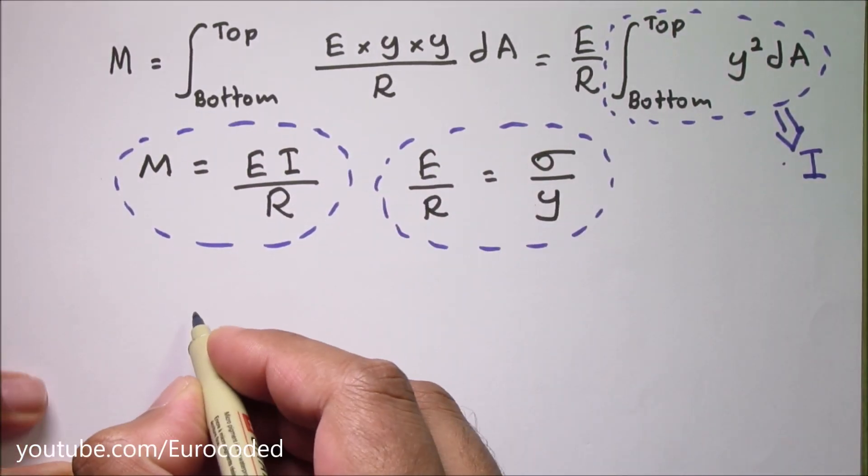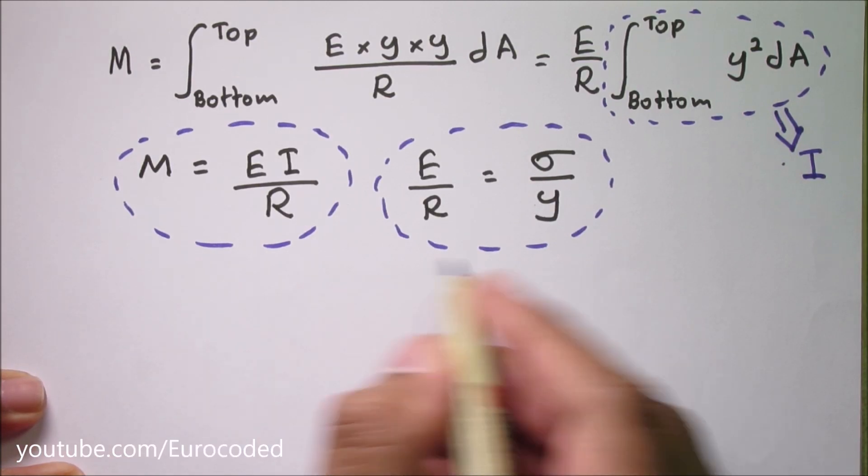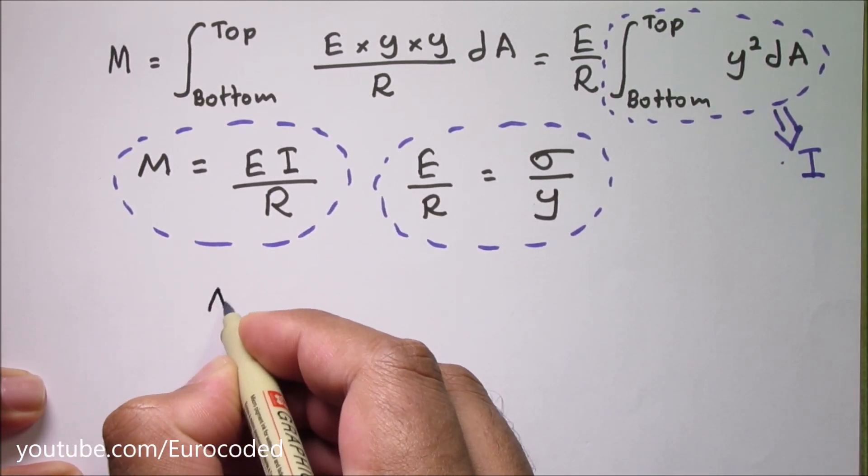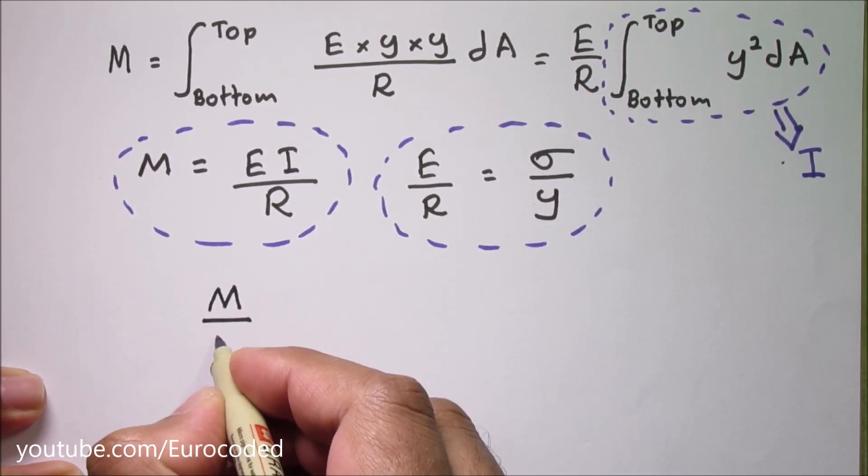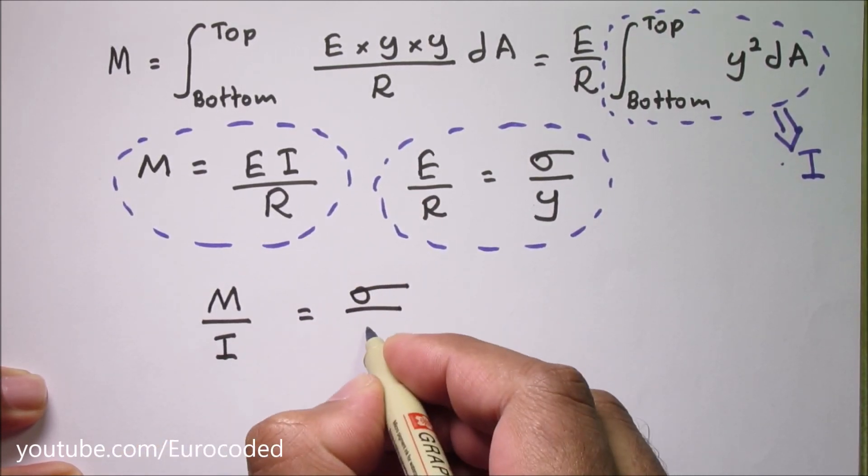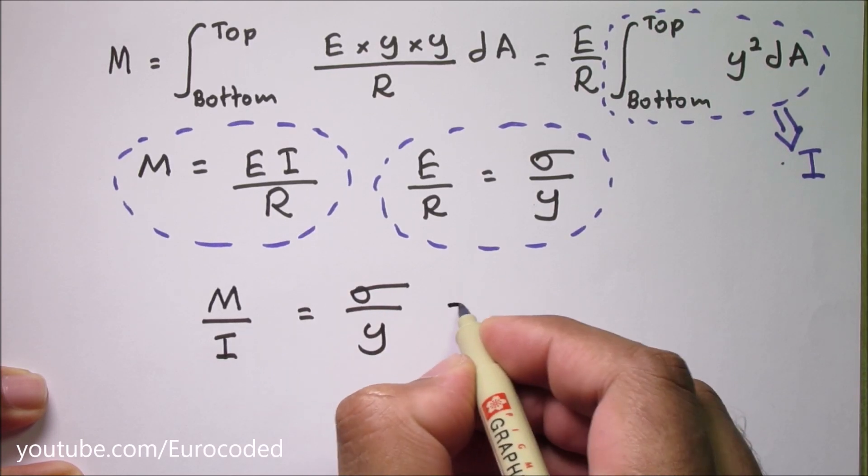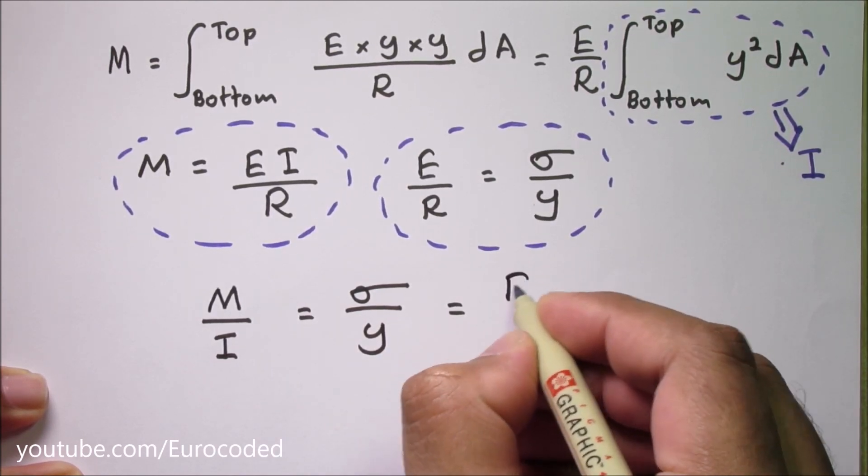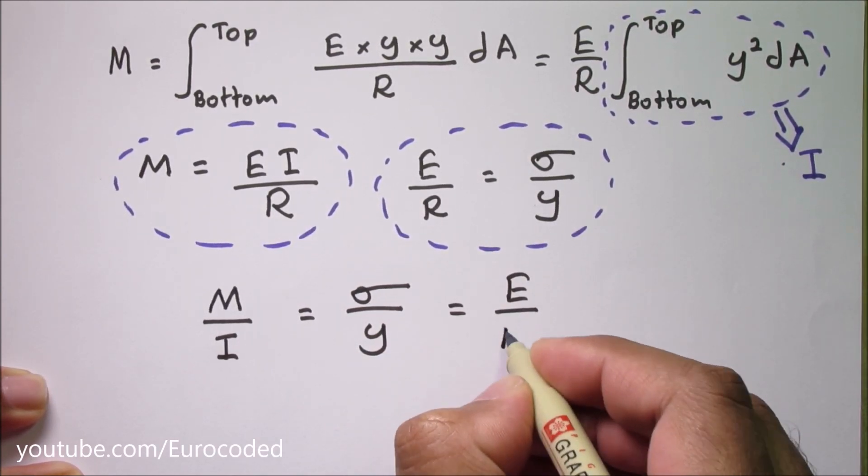When we combine these two relationships we can write M over I is equal to sigma over y and this is equal to E over r.